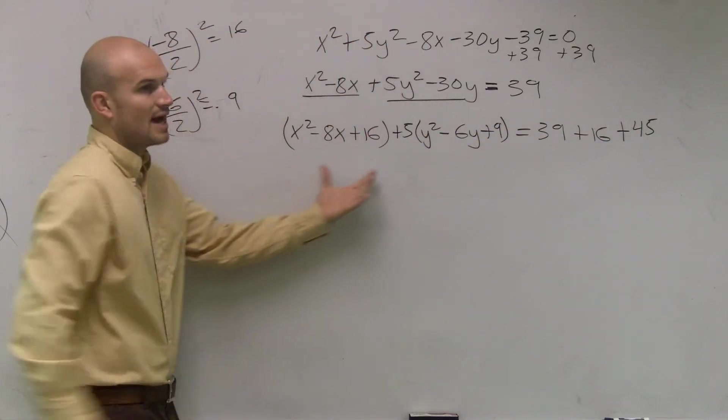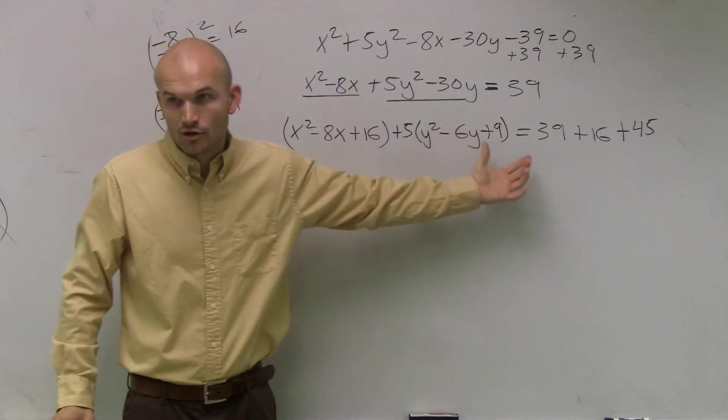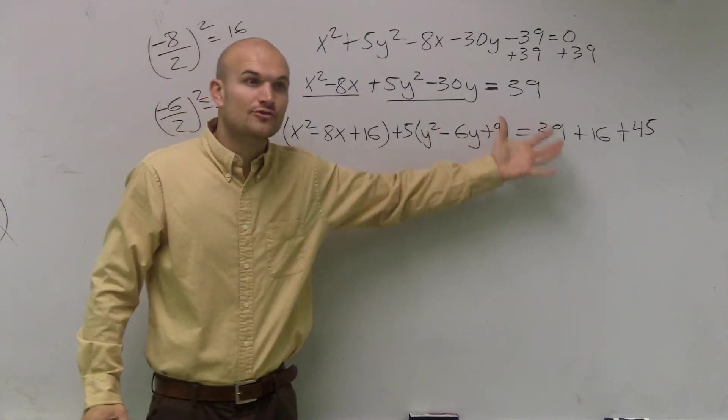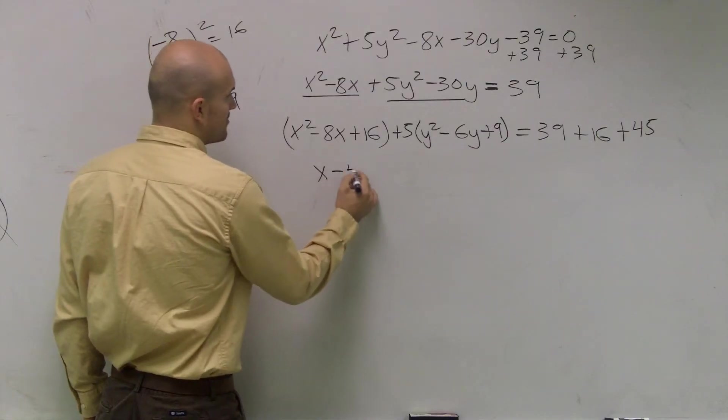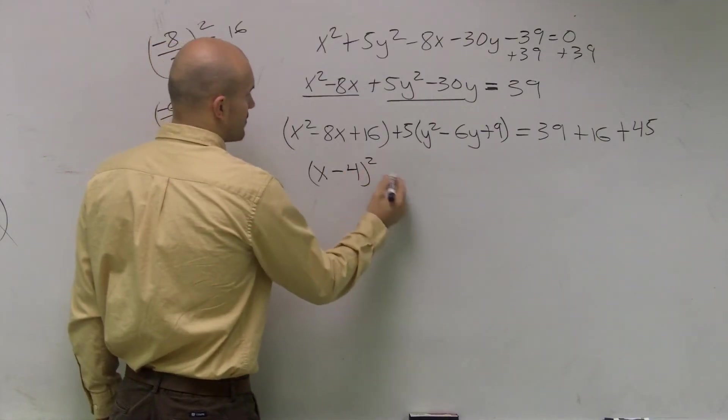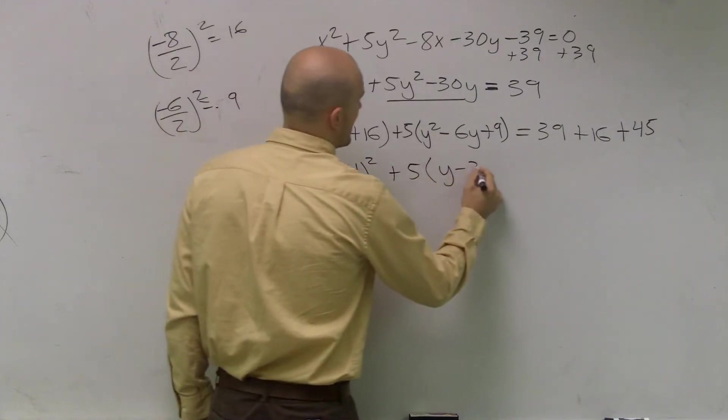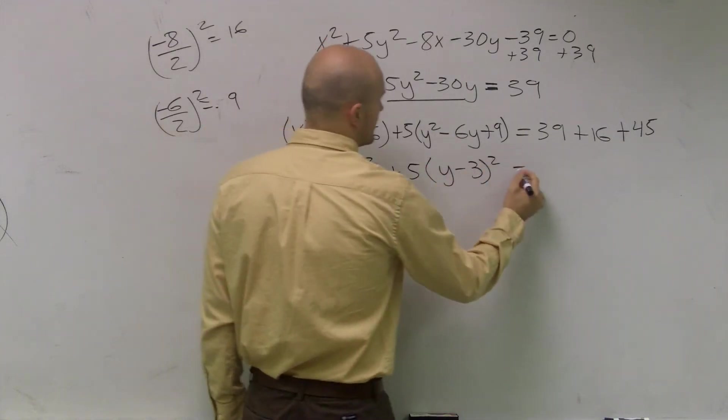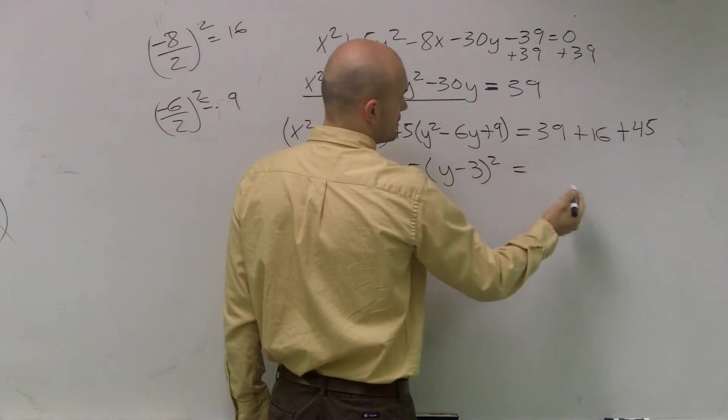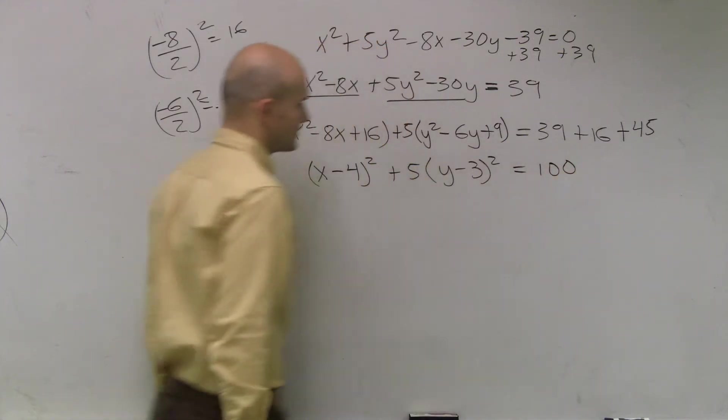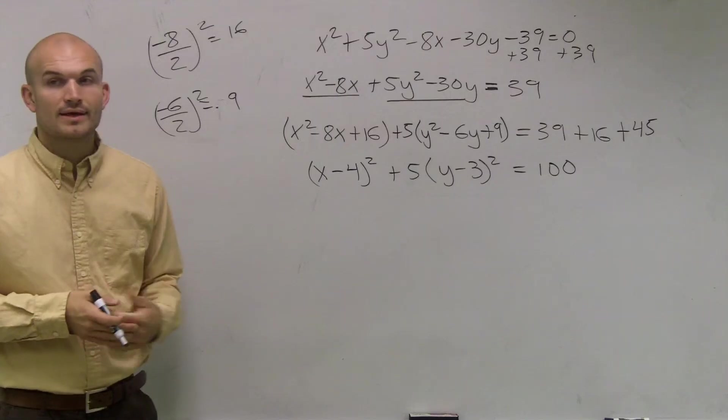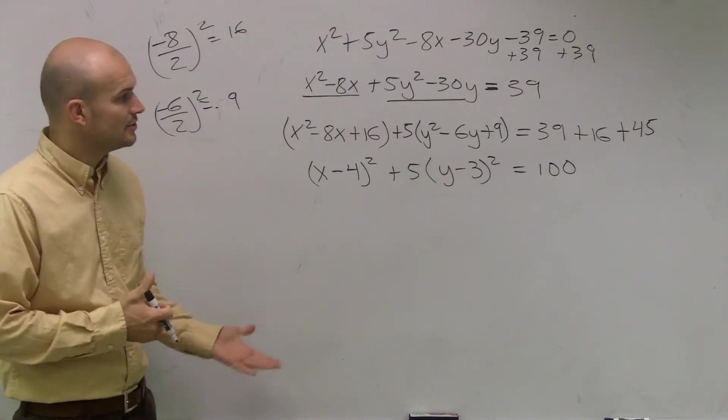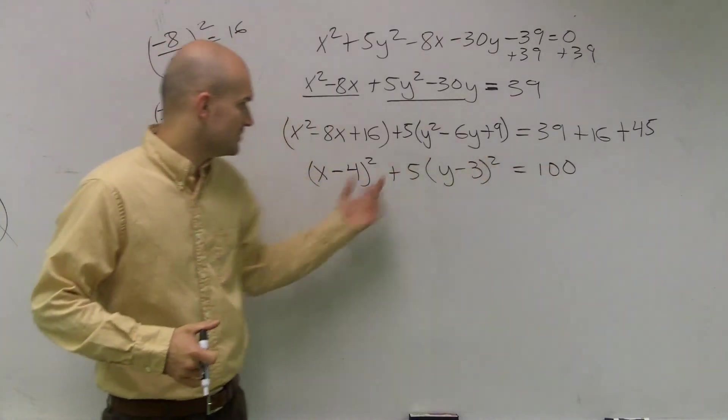Well now, I did this so I could have perfect square trinomials. So I could rewrite my perfect square trinomials as now this is going to be x minus 4 squared plus 5 times y minus 3 squared equals 100. And then lastly, to put this,